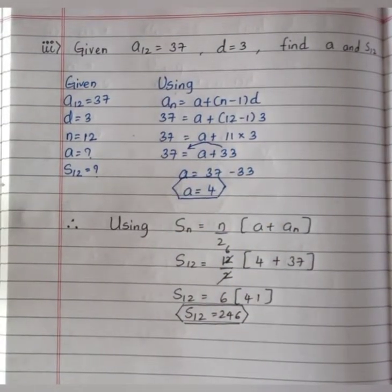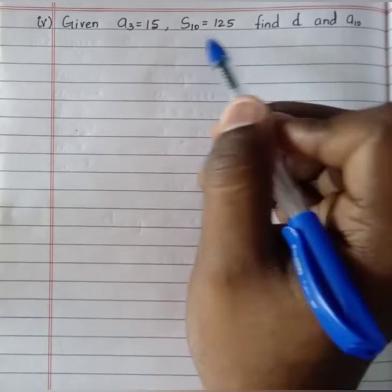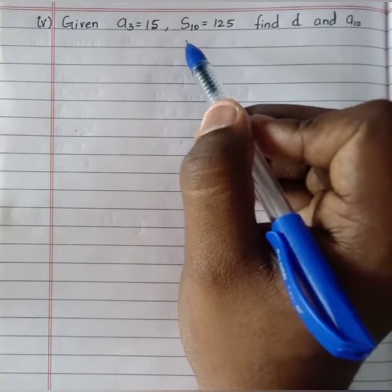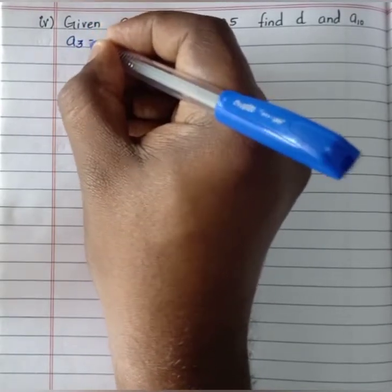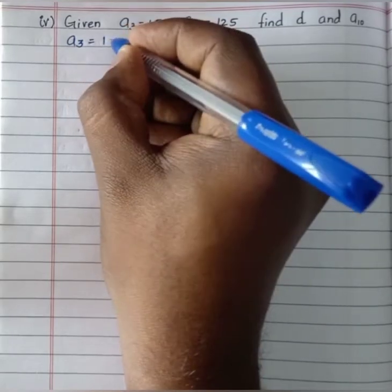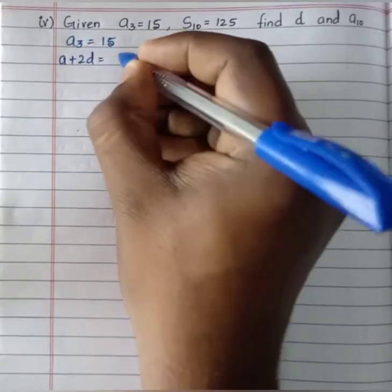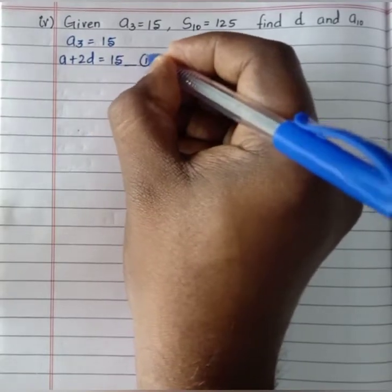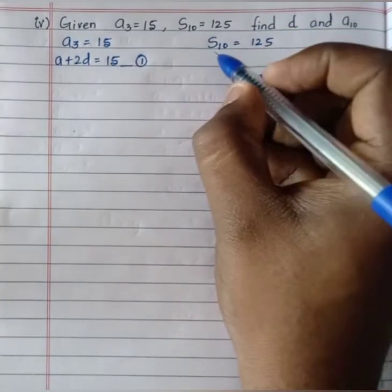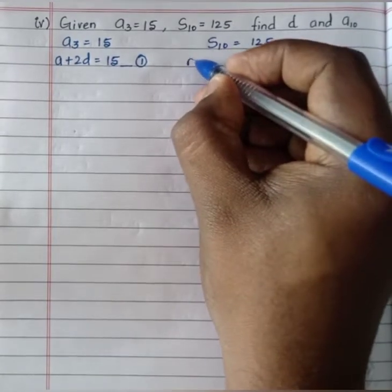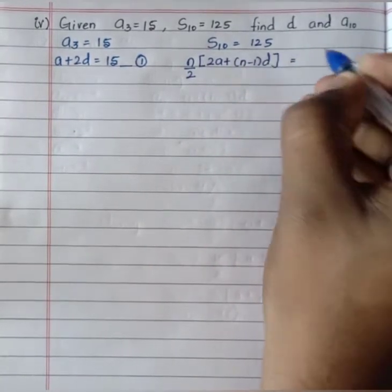Moving to the next question: given a3 equals 15 and S10 equals 125, find d and the 10th term. Writing a3 as a plus 2d by using the general form of AP. For S10 equals 125, using the sum formula: 10 divided by 2 times 2a plus 9d equals 125, which simplifies to 5 times 2a plus 9d equals 125.